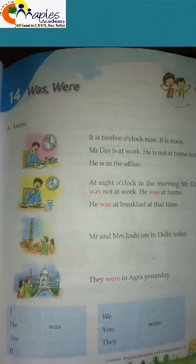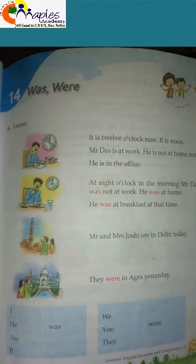We use 'were' with the pronouns you, we, and they. For example: 'They were in Agra yesterday.' 'They were at home.' 'We were at the fun fair last night.'